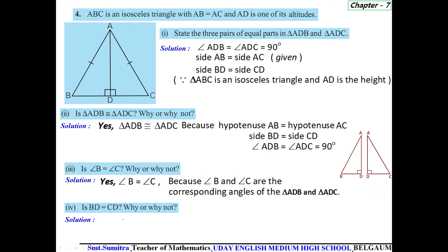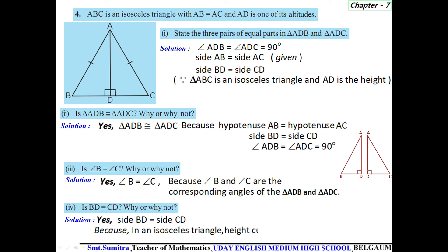Is BD equal to CD? Yes, side BD equals side CD because in an isosceles triangle, the altitude cuts the base into two equal parts. Here the height is AD and the base is BC, so AD cuts BC into two equal parts. Therefore, side BD equals side CD — this is true.